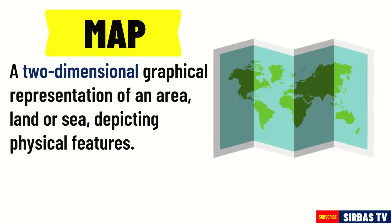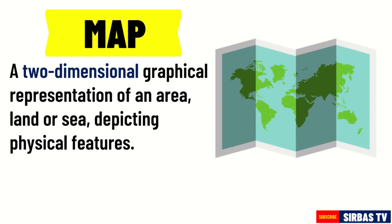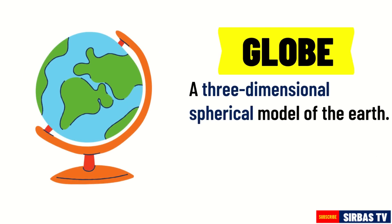A map is a two-dimensional graphical representation of an area, land, or sea depicting physical features. It can represent the whole or a part of the Earth. On the other hand, a globe is a three-dimensional spherical model of the Earth. It represents the whole Earth.